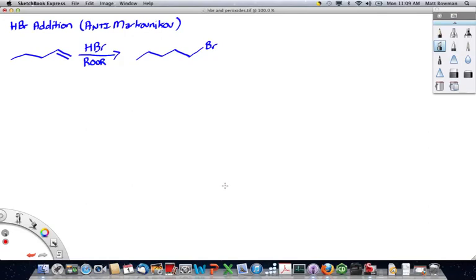HBr can be added either Markovnikov or anti-Markovnikov. In order to be added anti-Markovnikov, you need to have a peroxide present.